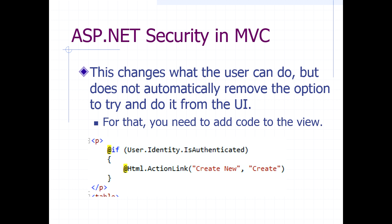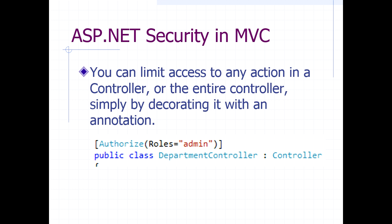If you just say Authorize by itself without arguments, it means anonymous users cannot go there — they have to at least be logged in and authenticated. You can further refine it with roles, and that can be a comma-separated list of multiple roles like admin, managers, and so on. You can also do specific users with a comma-separated list of usernames. There's quite a bit of flexibility there.